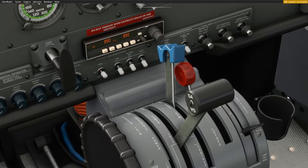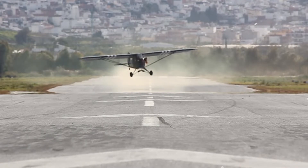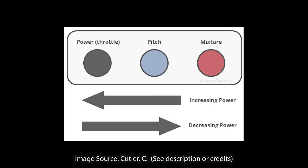The red knob is mixture — we have a video for that linked here. There is also a certain order you must follow when moving the controls. When increasing power, you move right to left; when decreasing power, you move left to right. For takeoff, you make sure you have full mixture, propeller pitch full forward, and then full throttle. Conversely, when coming off to cruise, you decrease your power, change your pitch, then lean your mixture. That's the order for all three.